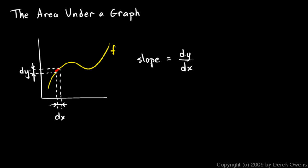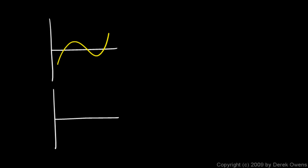We commonly think of DY over DX as the derivative, which is the slope of function f. So if we're given a function and sketch it, it has a slope at any x value, and we can make a graph of all those slope values. For example, if f is a cubic, we can find its slope at every point. Where the slope of f is zero, f prime will be zero. Where the slope of f is negative, f prime becomes negative. This ends up giving us a parabola for f prime.